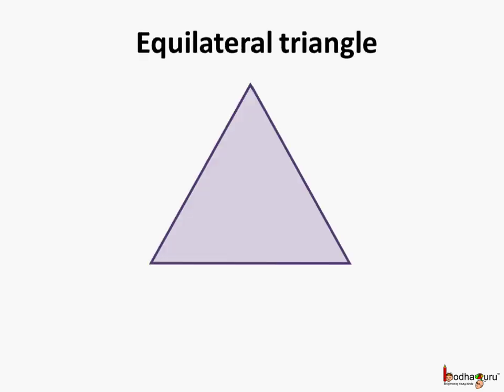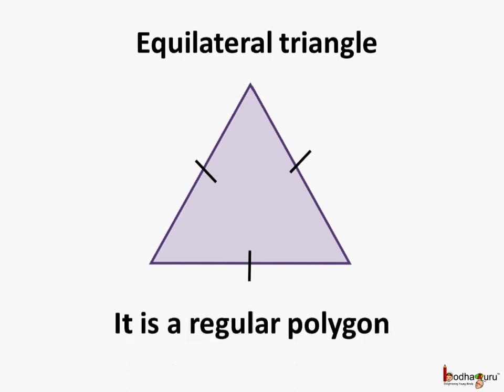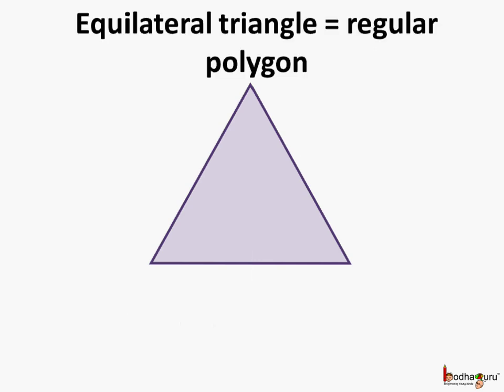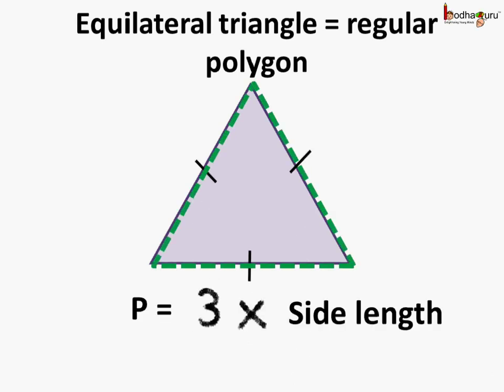In case of an equilateral triangle, all 3 sides are equal. So we can say it is a regular polygon, meaning a polygon which has all sides of equal length. So we can say an equilateral triangle is a regular polygon with 3 sides, and its perimeter is equal to 3 times the side length, where all sides are of equal length.